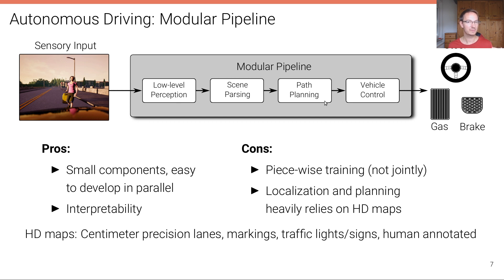While these modules have been trained independently from the actual downstream task, what we actually care about is the self-driving performance. And then furthermore, localization and planning in current state-of-the-art self-driving systems and prototypes heavily relies on these HD maps that involve a lot of human labor to create and to maintain up-to-date.